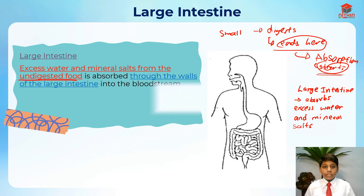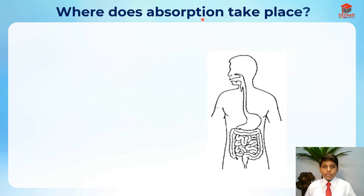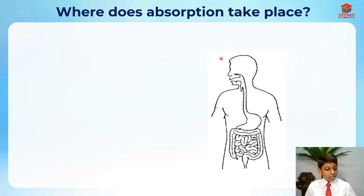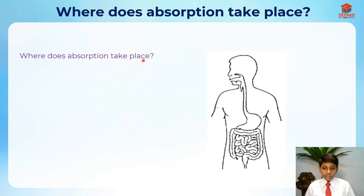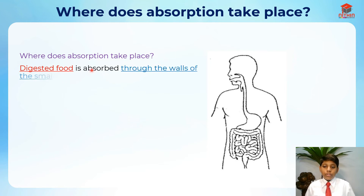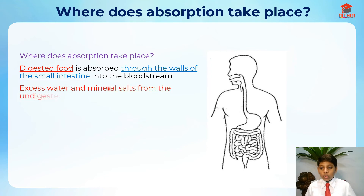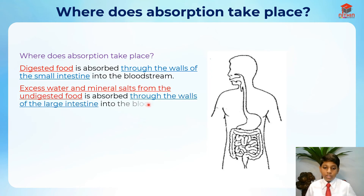Now combining both answers for 'where does absorption take place?': Digested food is absorbed through the walls of the small intestine into the bloodstream. Excess water and mineral salts from the undigested food is absorbed through the walls of the large intestine into the bloodstream. Both answers are placed together.